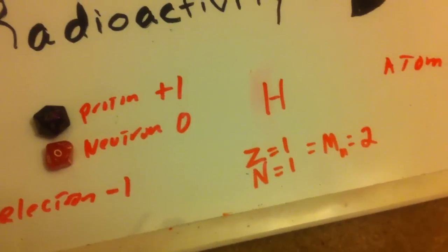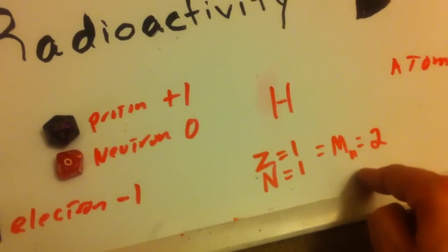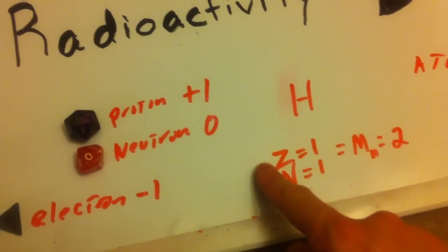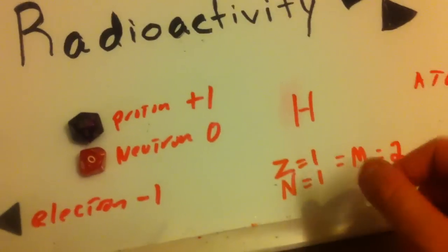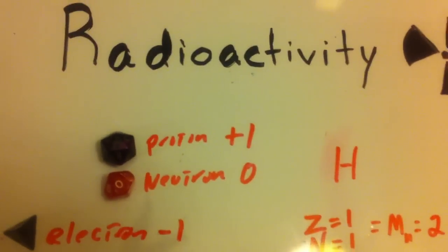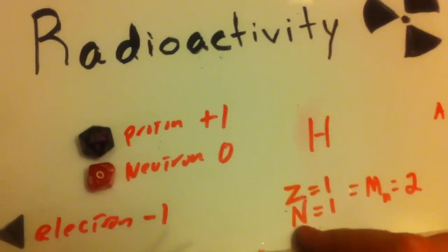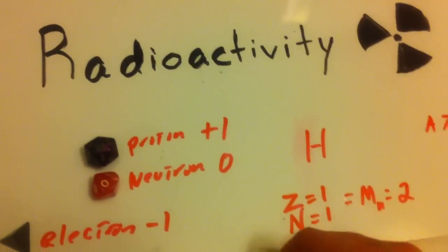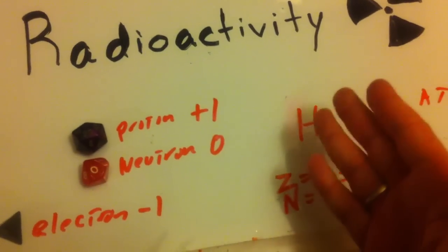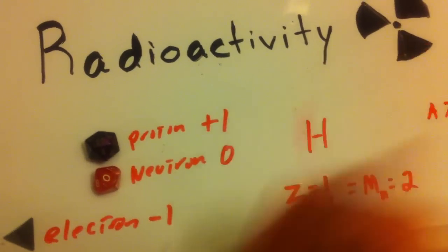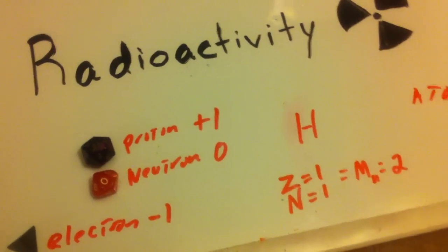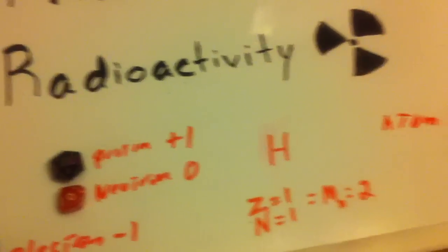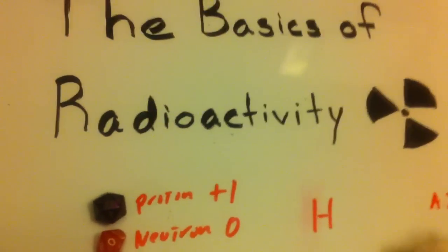So mass number equals number of protons — which for whatever reason uses the letter Z — plus N from neutrons. That seems a bit weird. Why don't we just call it hydrogen if it always looks like that? Well, it doesn't always look like that. Let me give you an example.